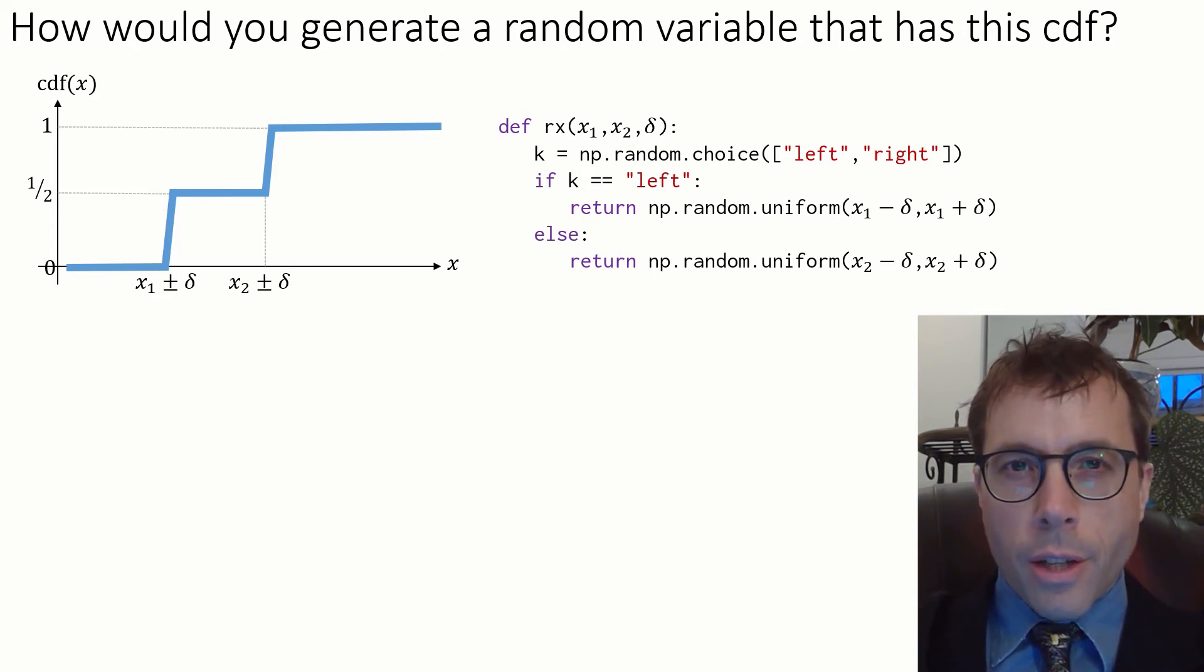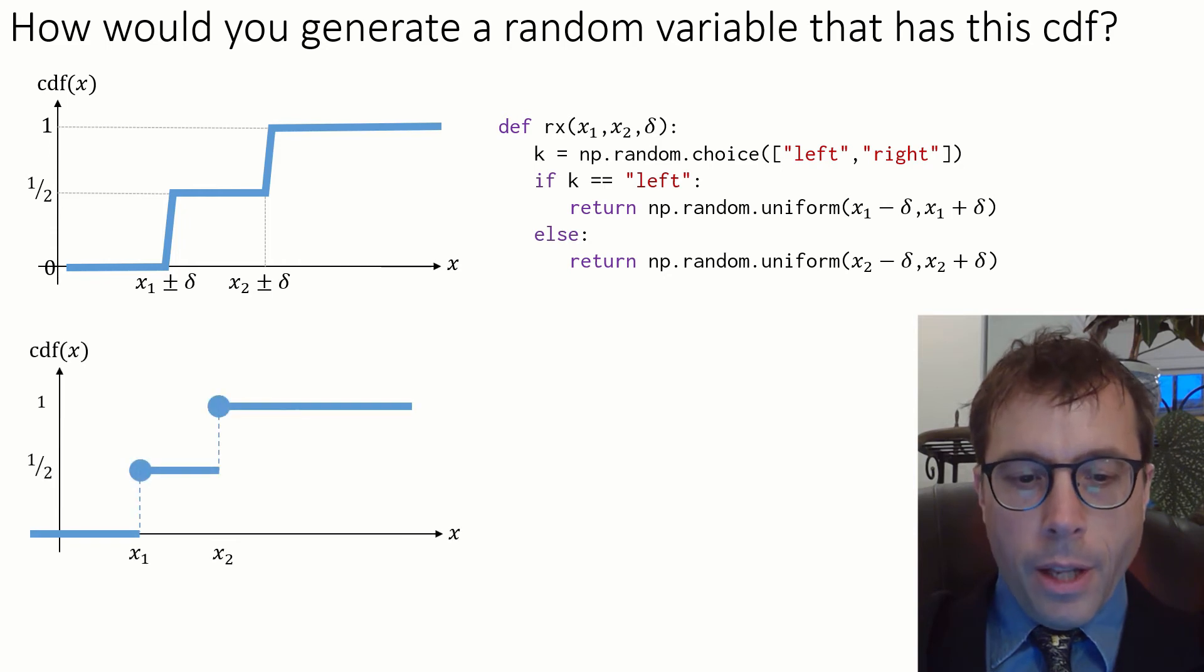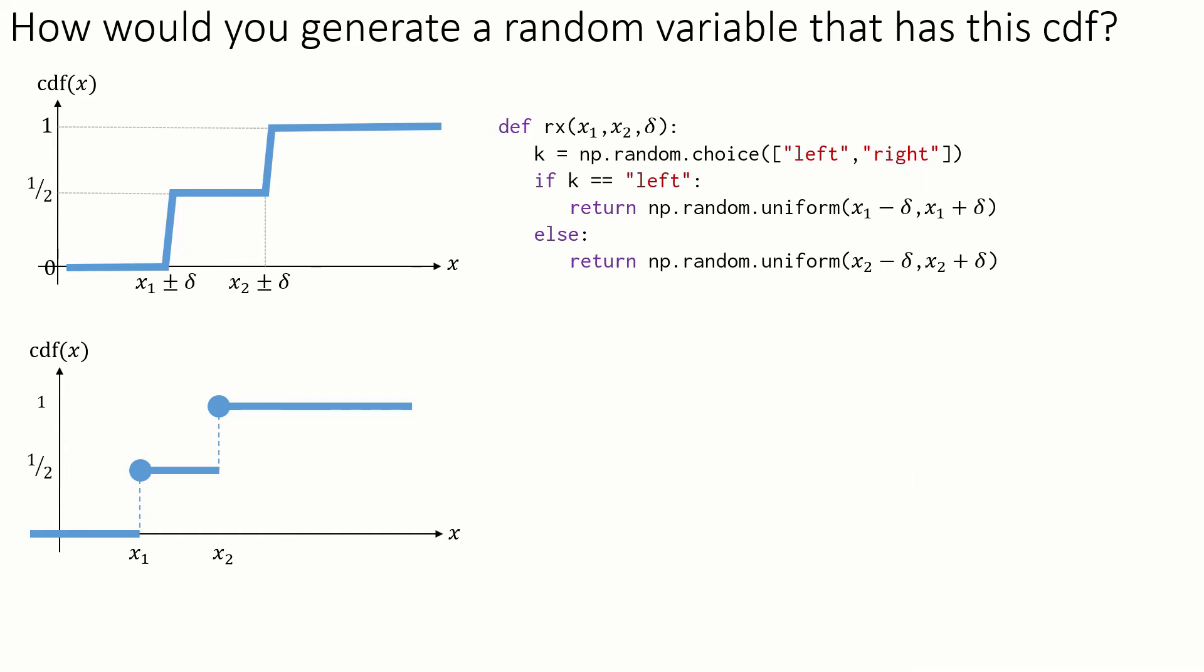Now, let's take it to the extreme. Let's let delta go to zero, giving us a step function. If we take just the same code as before, and ask what happens when delta is set to zero, it's easy. Either return x1 or x2.